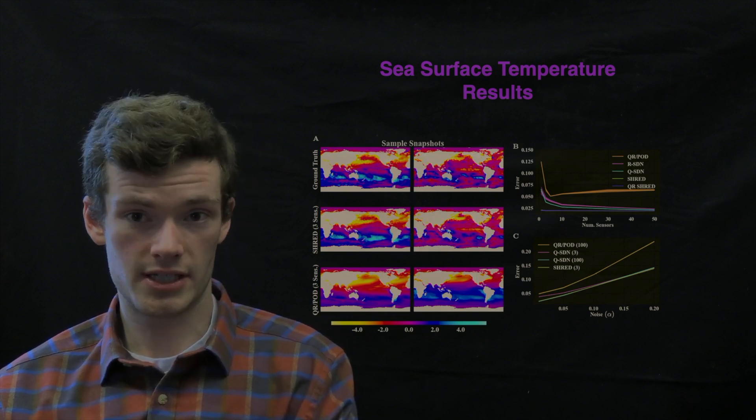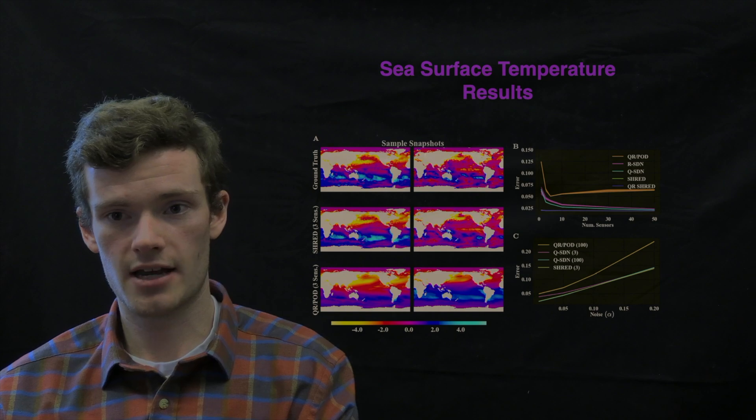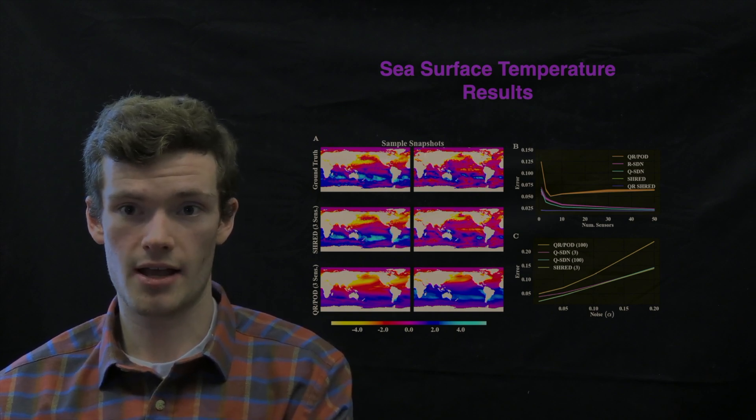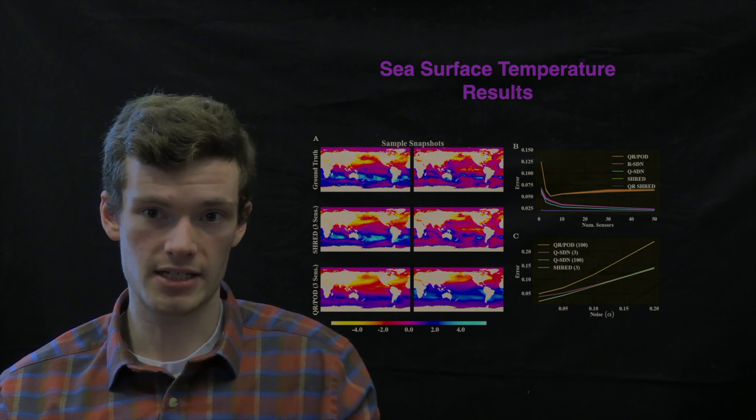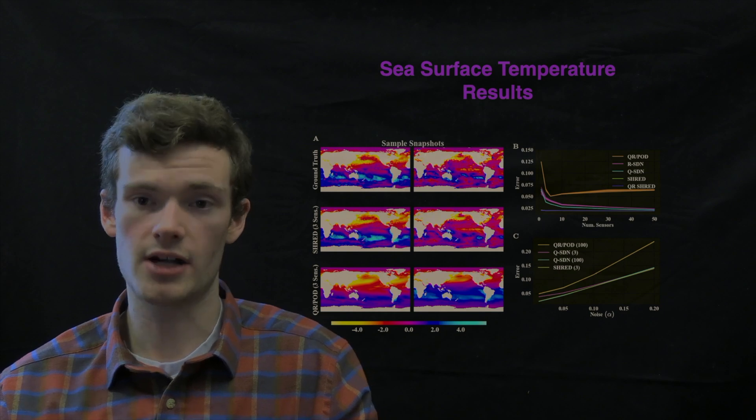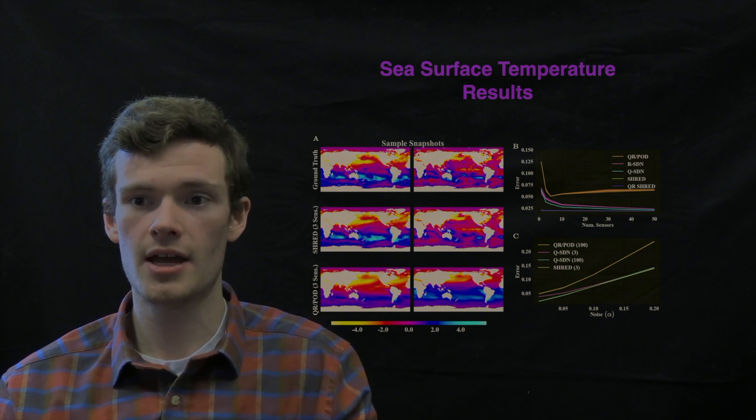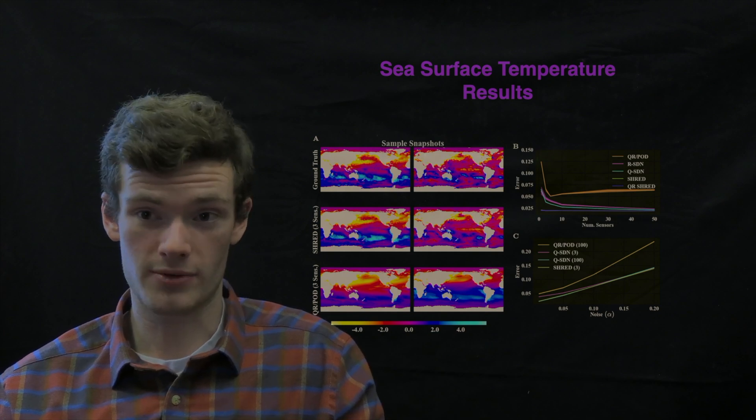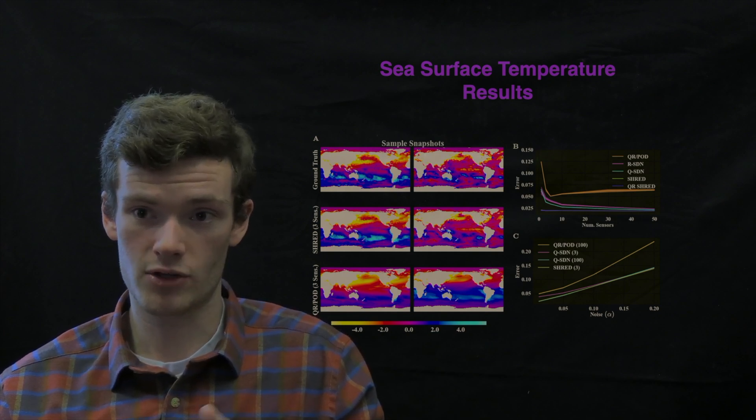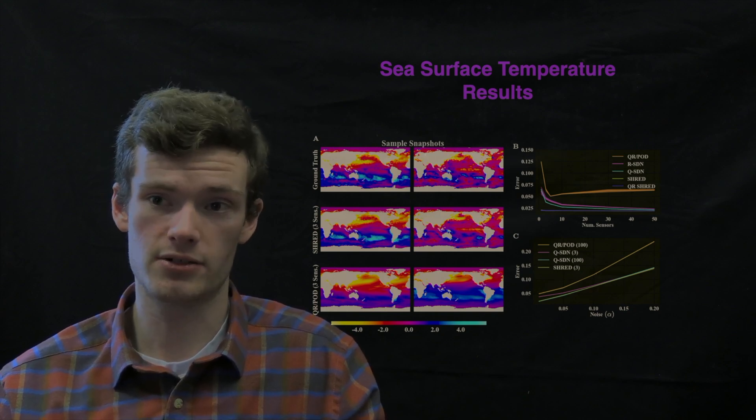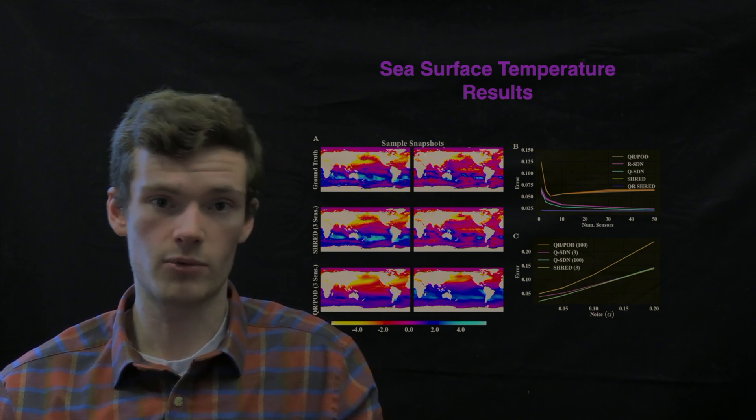Very similar results in the sea surface temperature data set that we've looked at. Again, you can just see from the reconstructions that SHRED is able to capture fine-grained details of the flow that the QRPOD, or linear reconstruction method, is incapable of, and does so with essentially one to three sensors, where QRPOD and other shallow decoder networks require far more sensors to achieve even comparable performance.